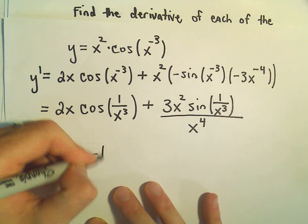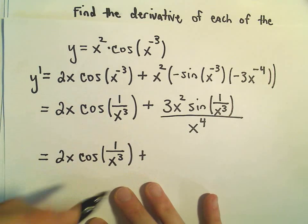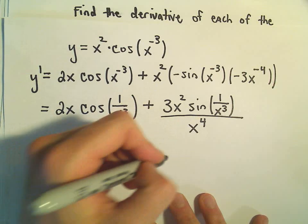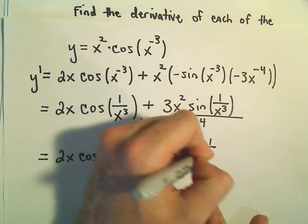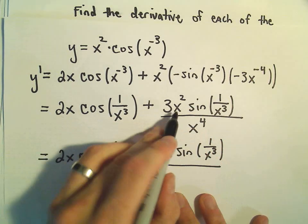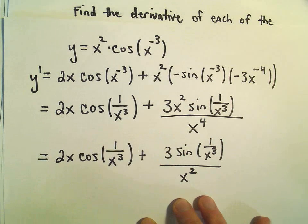We have 2x times cosine of one over x cubed. Then we can cancel our x squared over x to the fourth. When we cancel x squared over x to the fourth, we can just make that x squared in the denominator.